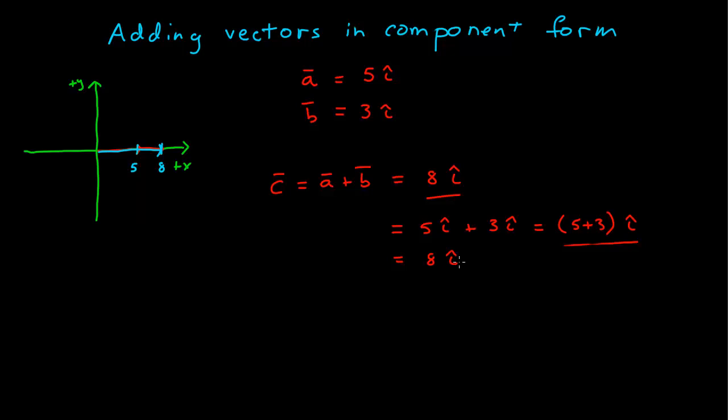In fact, if I were to just go back up here, where I have a and b, and just sort of add them vertically here, I could just add my 5 and 3 together, 8 i-hat.